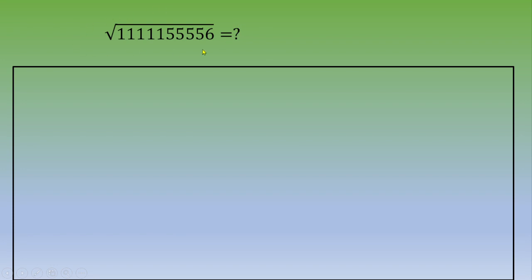We would like to calculate the square root of this number and we don't have access to a calculator. One way to do that is to transform this number into a perfect square. That way we end up with the square root of x squared, and we are going to focus on the positive value, so the square root of x squared equals x.